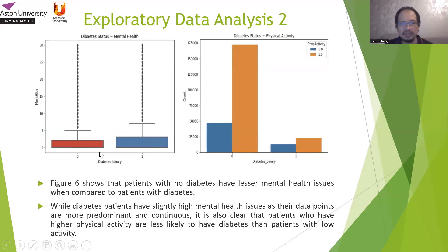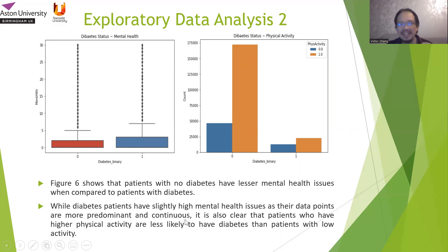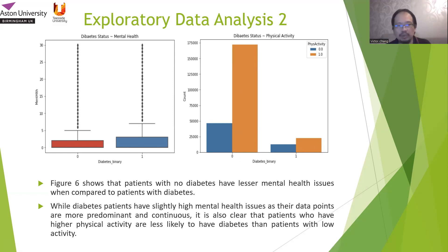We can see that patients with no diabetes have fewer mental health issues compared to patients with diabetes. Diabetes patients have slightly higher mental health issues as the data points are more predominant and continuous. It is also clear that patients with higher physical activity are less likely to have diabetes than patients with low activity. Those who exercise a lot tend to be on the safer side, and there is a correlation between physical activity and diabetes. Even if some people have diabetes, exercising more will make the impact minimal.